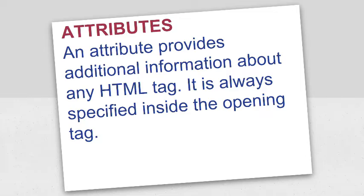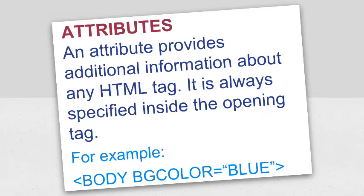Attributes: an attribute provides additional information about any HTML tag. It is always specified inside the opening tag. All attributes consist of two parts: a name and a value. The attribute value is always enclosed within double quotes. For example, body bgcolor equals blue. Here, bgcolor is an attribute of the body tag — bgcolor is the name of the attribute and blue is the value.